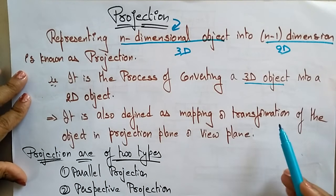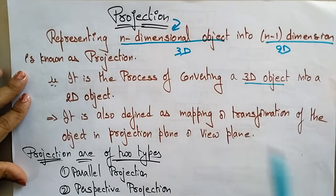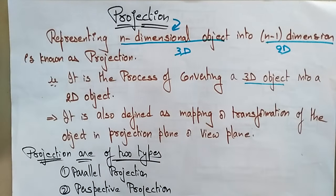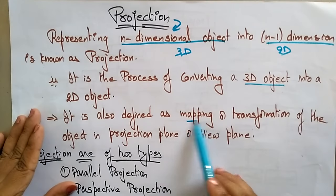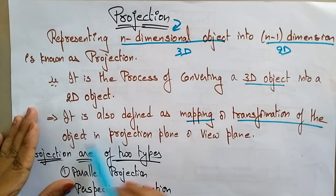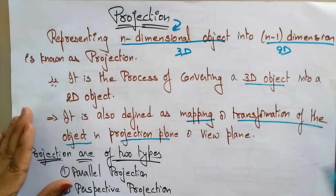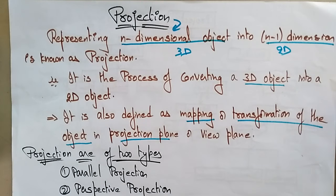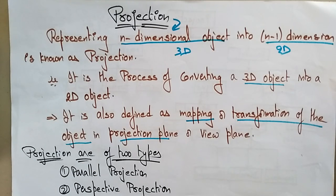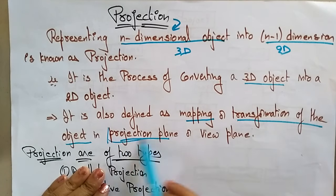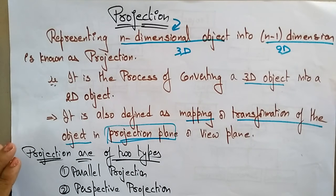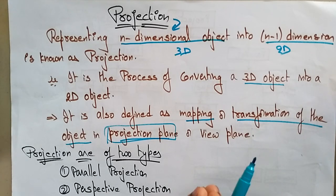Projection is also defined as mapping or transformation of the object in a projection plane or a view plane. So it is not only the conversion of 3D objects into 2D objects — we can also call it a mapping or transformation of an object in the projection plane. A projection is a transformation of an n-dimensional object into an n-minus-one-dimensional object in a projection plane or view plane.